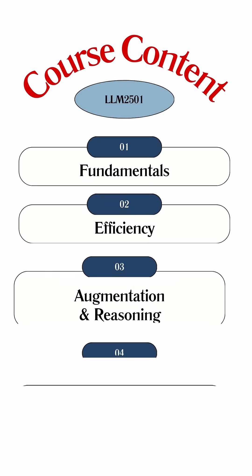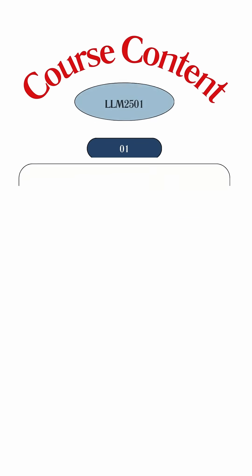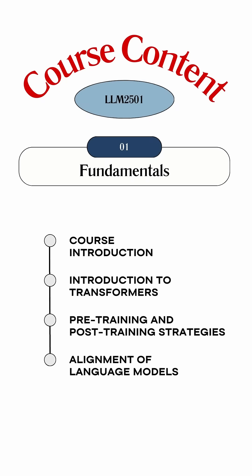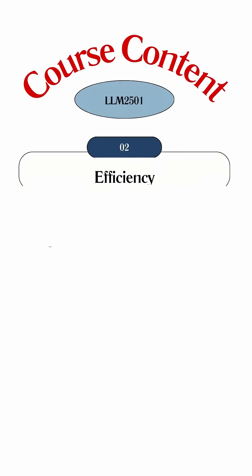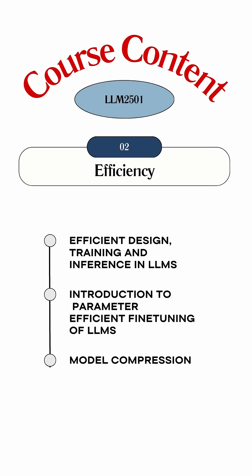This time we divide the course structure into 5 components. We start with the foundations of LLMs — we are not going to cover any basics of NLP this time. The course starts with Transformer and different pre-training and post-training strategies, going deeper into recent alignment techniques. The next module focuses on Efficiency: Parameter Efficient Fine Tuning, recent PEFT methods, Model Pruning, and Model Distillation.